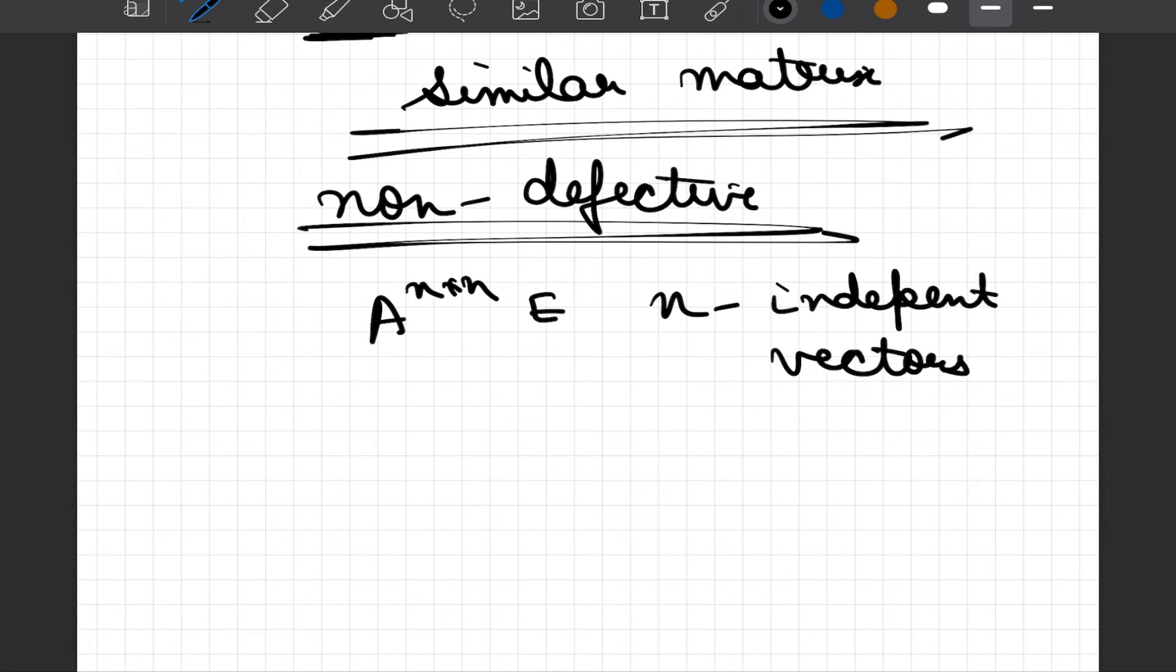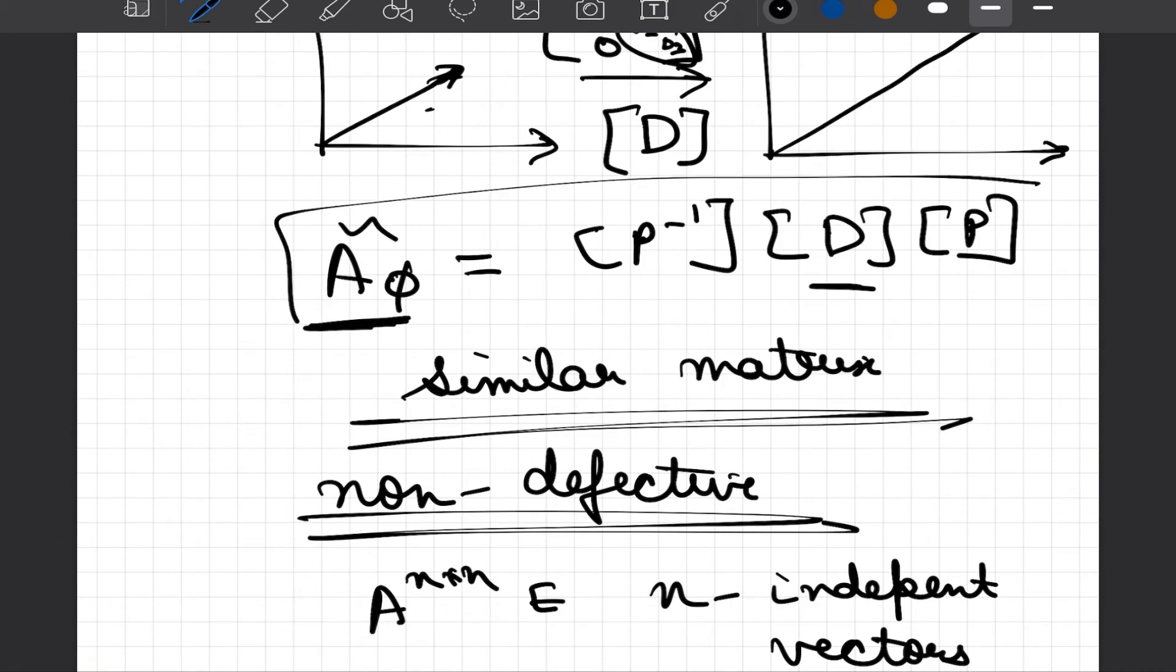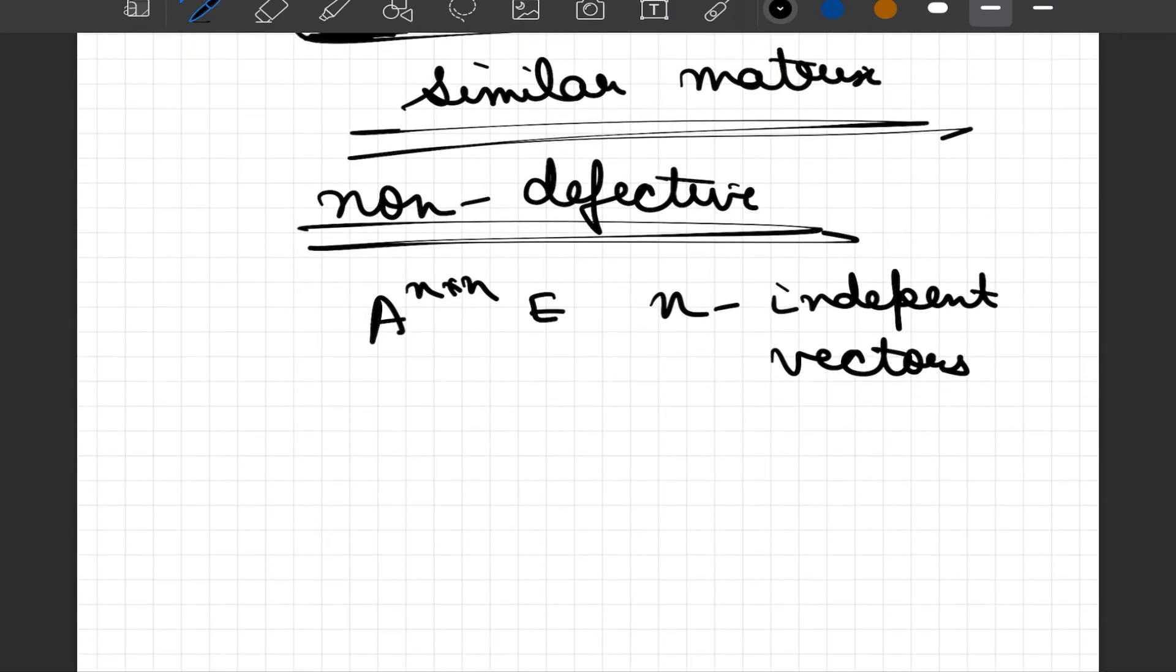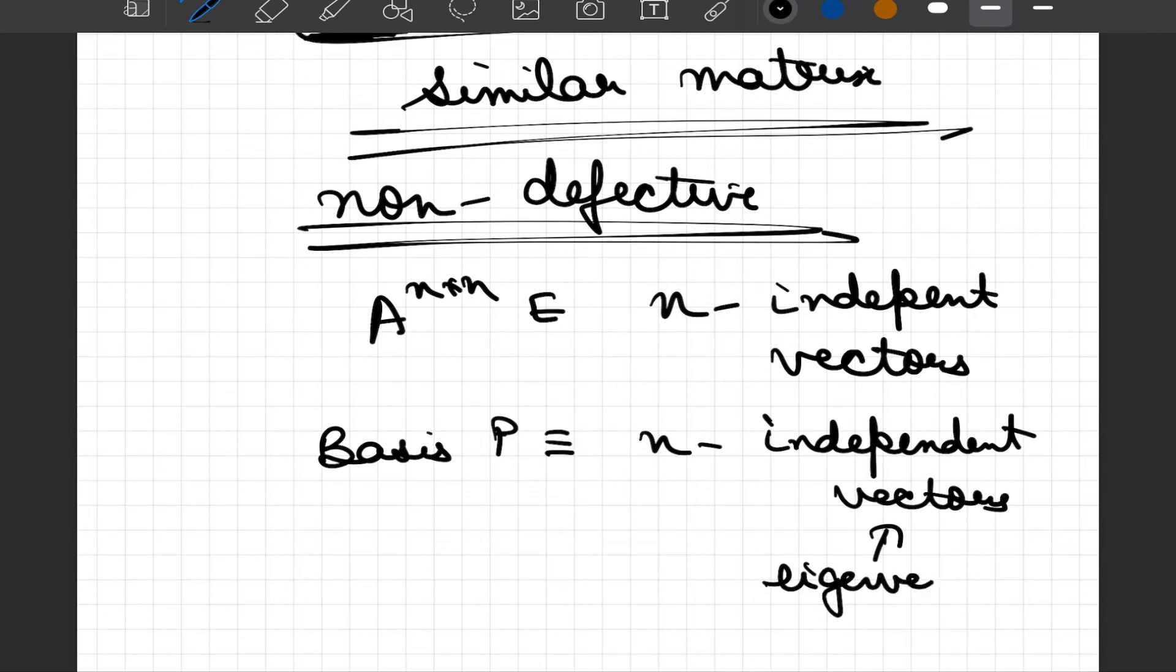If n independent vectors can be obtained, then we can always write the basis P in terms of these n independent vectors, and these n independent vectors have to be eigenvectors associated with P.